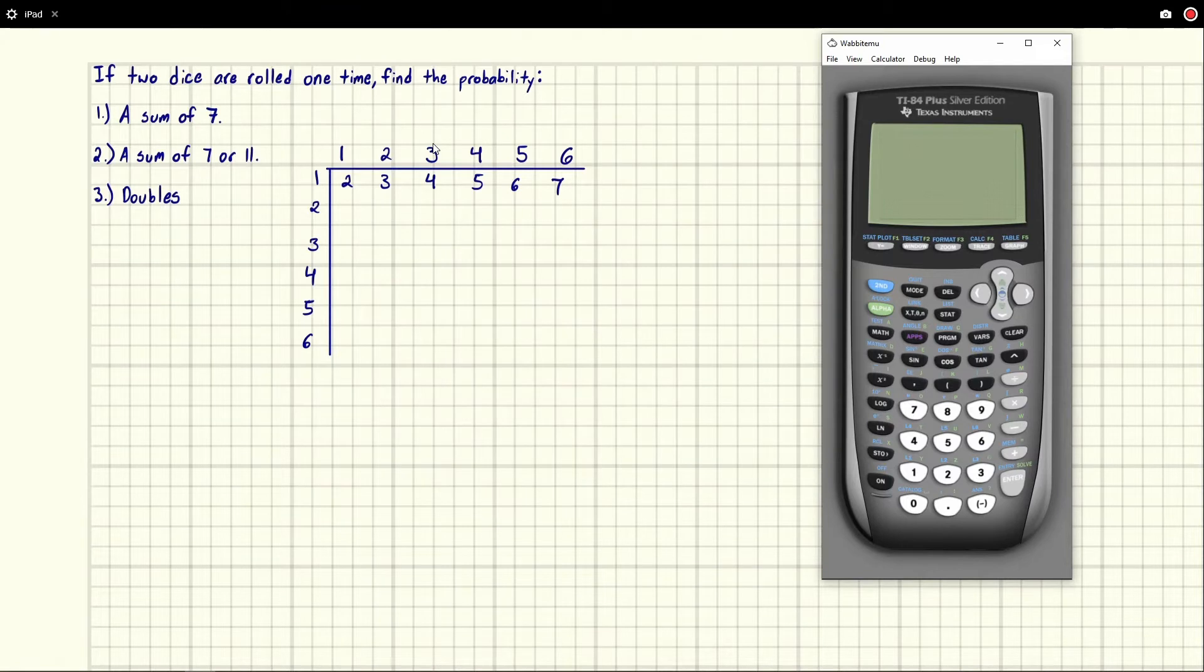And so if we were to roll a two on the second dice and a one on the first dice, we would have a three. And we actually can count this way too. So two, three, four, five, six, seven. And then we just start going across. So we get three, four, five, six, seven, eight.